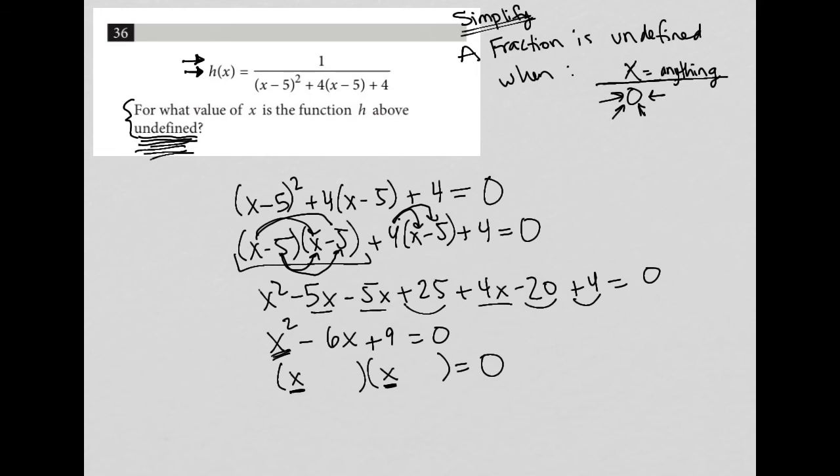I then go to the last position. I want to multiply this times this and get a positive nine. But then when I add those two values together, I want a negative six. So negative three accomplishes that because negative three times negative three is positive nine and negative three plus negative three is negative six.